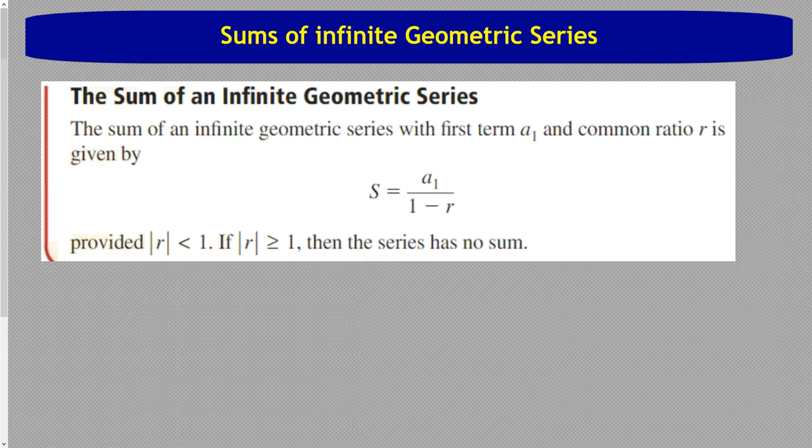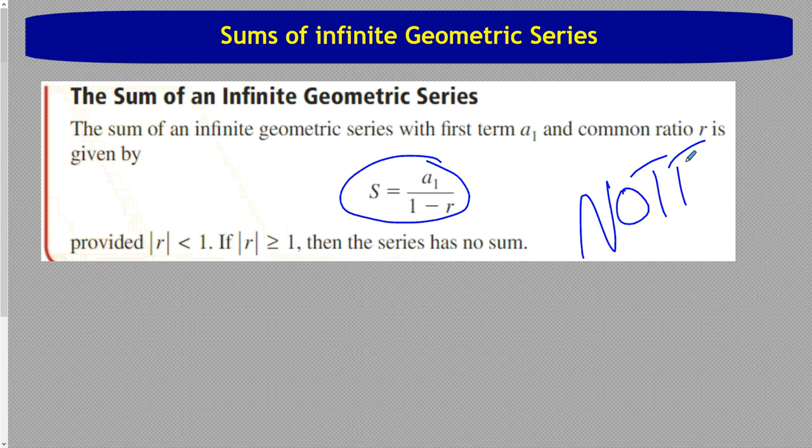To find the sum of an infinite geometric series, we're going to use this formula. You're going to want to make sure this is in your notes right now. a sub 1 is the first term. Common ratio is what we're multiplying by every time, so those are the only two things we're going to need.